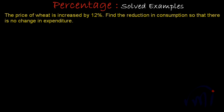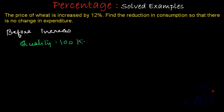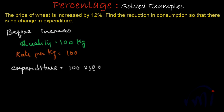If you're comfortable using variables, that will definitely be a faster method. In the first method, we assume the quantity consumed earlier as 100. Let's consider the case before the increase: quantity consumed was 100 kg and rate per kg was also 100. The total expenditure in this case will be 100 × 100 = 10,000. This was the expenditure before the increase.